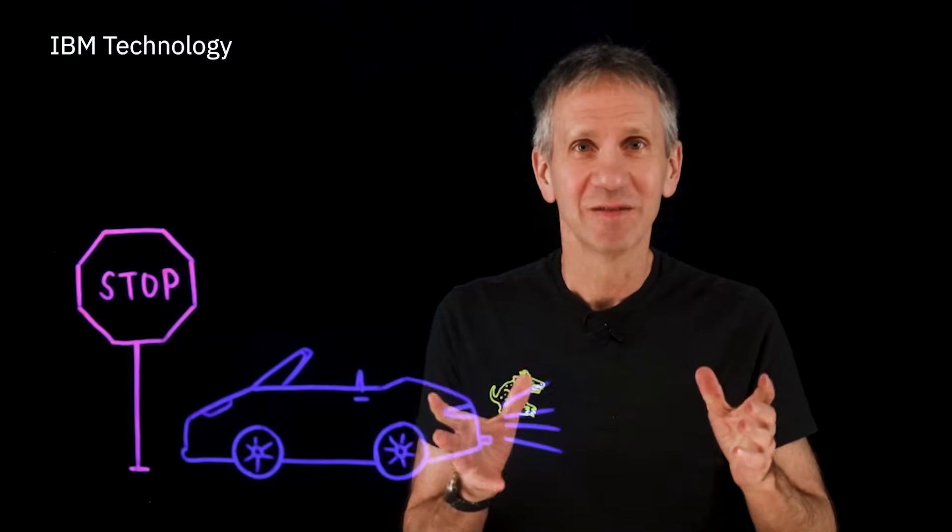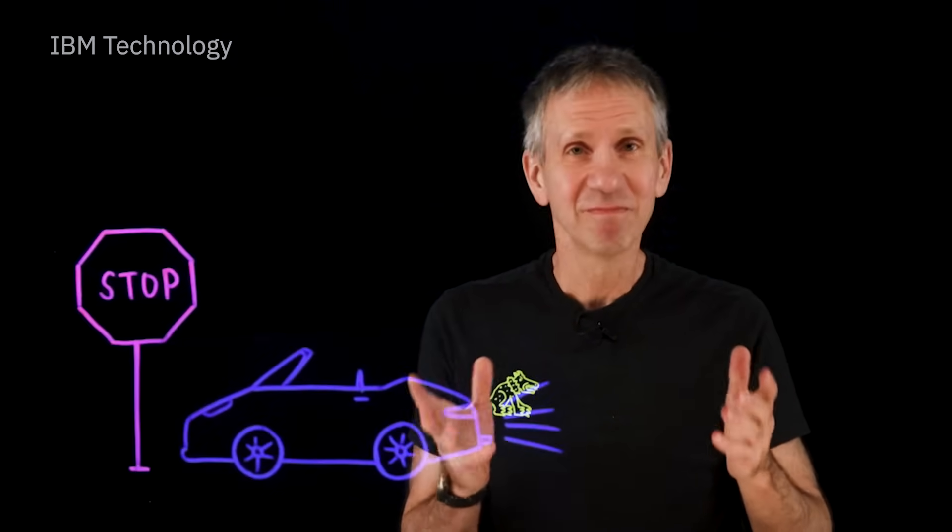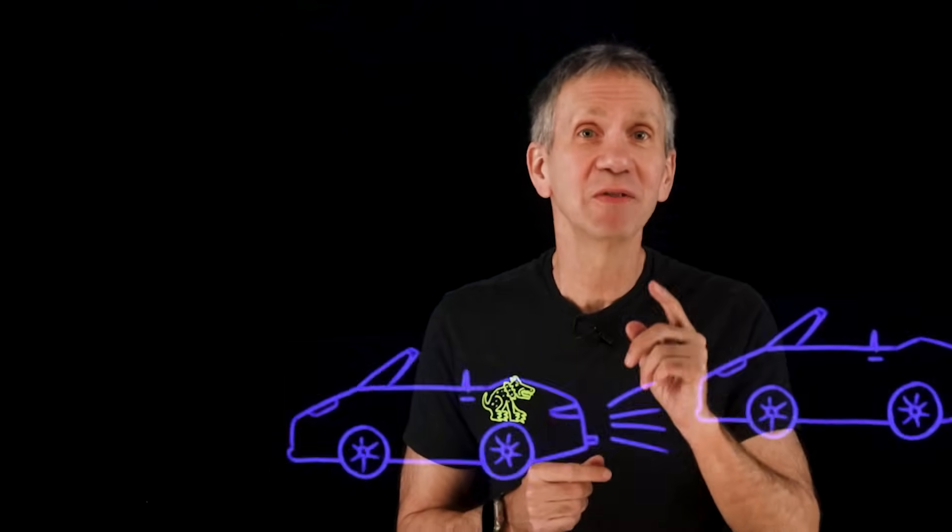Why do you put brakes on a car? So you can stop, right? No, it's so you can go really fast. And if you don't believe me, how likely are you to get in a car that has no brakes? Not at all, right? And if you think about it this way, the fastest cars in the world are the ones with the best brakes. They have to have that so that they can take risk, so that they can manage risk.